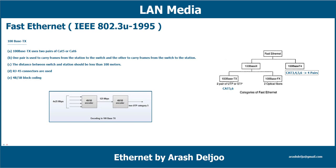IEEE 802.3 100Base-T4 requires four pairs of UTP category 3, 4, 5, or 6. And 100Base-FX — where F means fiber — requires two optical fiber cables.